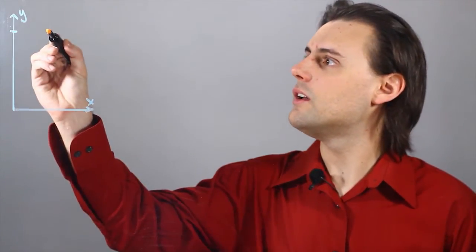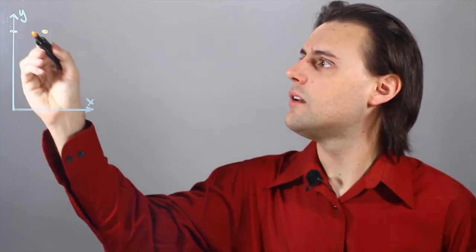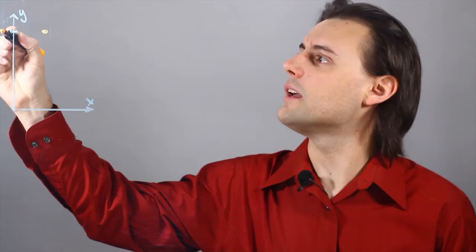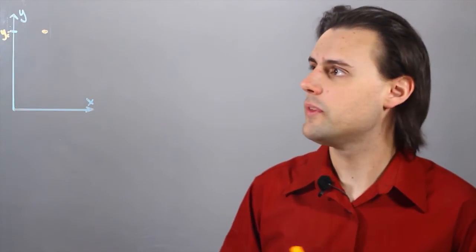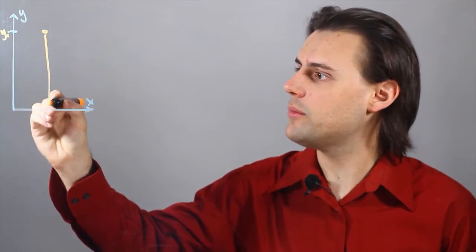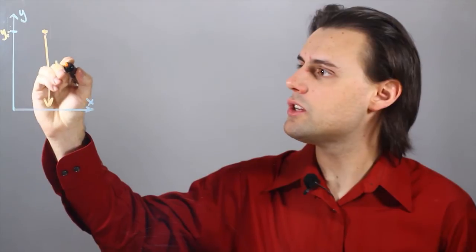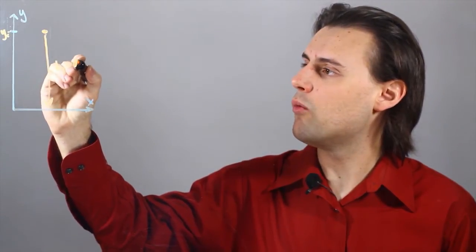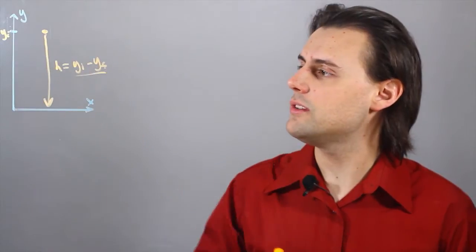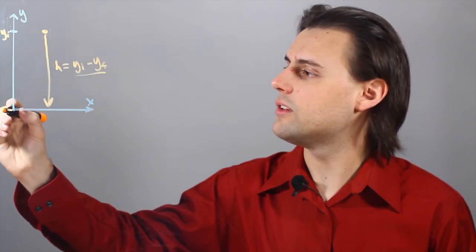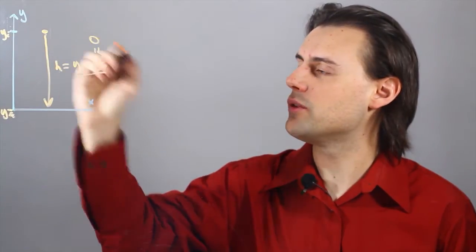So if I initially have the ball up here where this is my initial position y sub i and I let go of the ball and it drops, it falls a height h that is equal to y initial minus y final, which in this case is at the origin and so my y final is simply equal to zero.